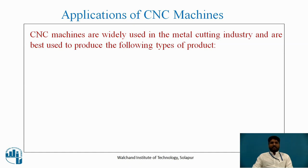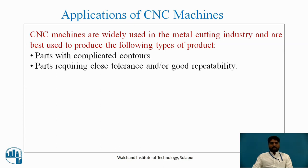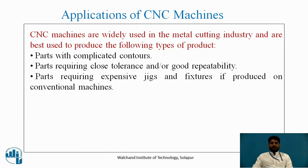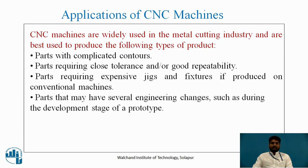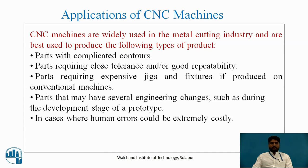CNC machines are widely used in the metal cutting industry and are best used to produce: parts with complicated contours; parts requiring close tolerances and good repeatability; parts requiring expensive jigs and fixtures if produced on conventional machines; parts that may have several engineering changes such as during the development stage of a prototype; and cases where human errors could be extremely costly.